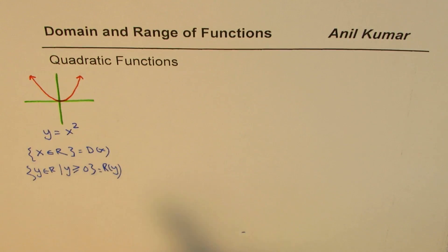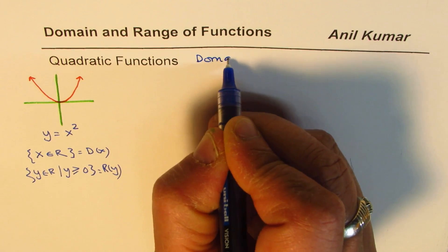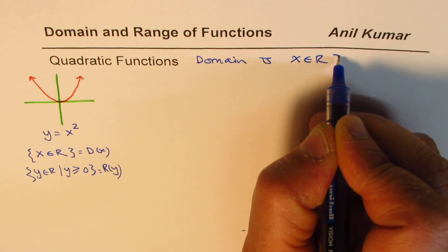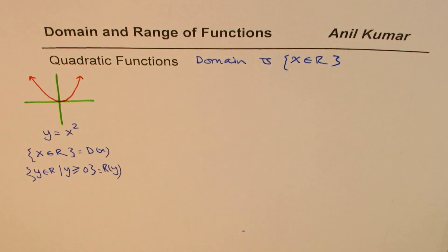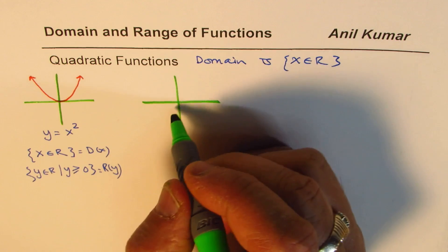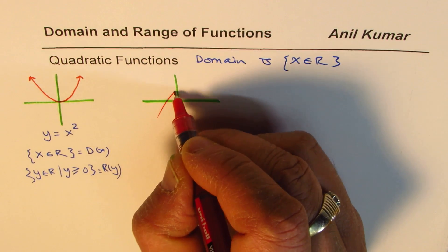So remember, domain is all real numbers. So let me write down here, domain is x belongs to real numbers for all these parabolas. Now, what I will do here is I'll sketch one. You need to find its domain and range. As you know, domain is always real numbers, so we'll focus more on the range.